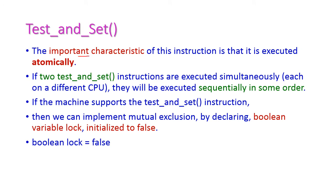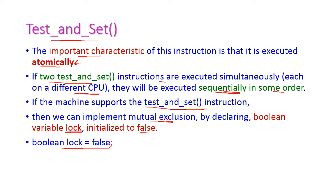The most important characteristic of the test-and-set method is that it should execute atomically — at a time only one test-and-set should be executed. If two methods come from different CPUs, they will be executed sequentially with some order, not concurrently. If the machine supports this test-and-set instruction, we implement mutual exclusion by declaring a boolean variable lock initialized to false. The value for false is zero initially.